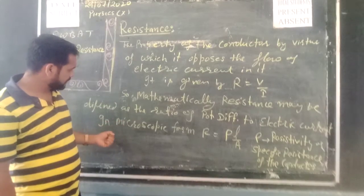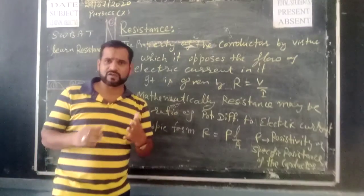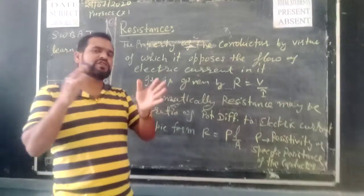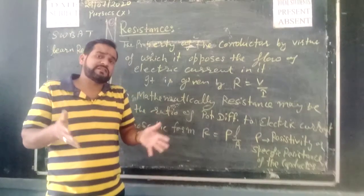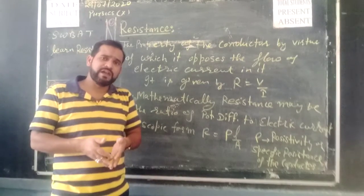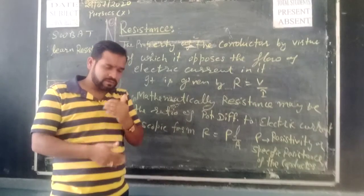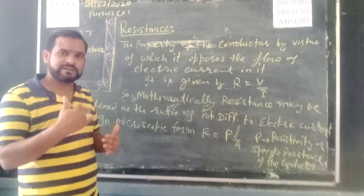And in microscopic form — when we are talking about microscopic form, we are talking about resistivity, also known as specific resistance of the conductor.